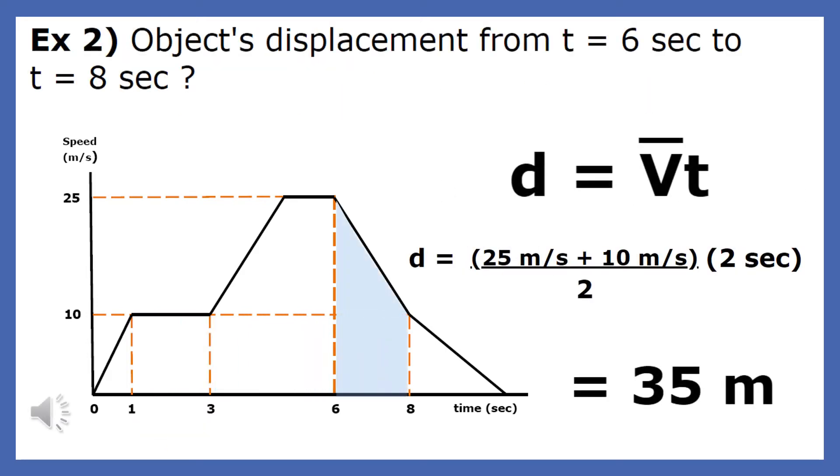What is the object's displacement between 6 and 8 seconds? To find the displacement, we could once again use d equals v average times t, or we could find the area of the trapezoid. I'm going to use d equals v average times t.